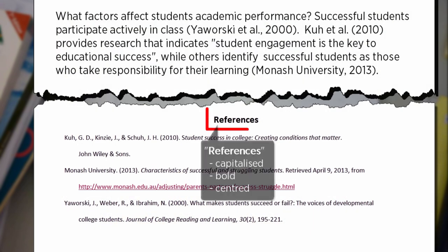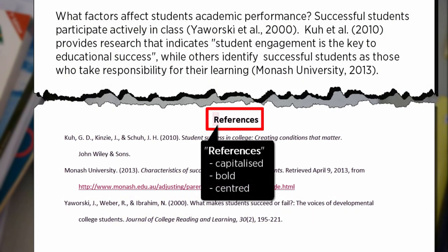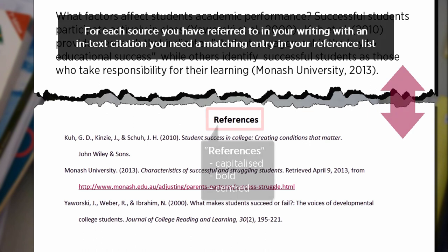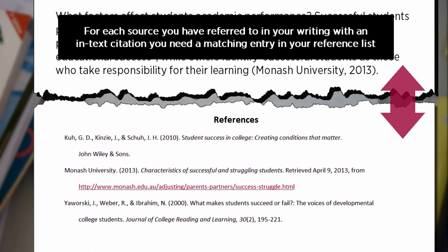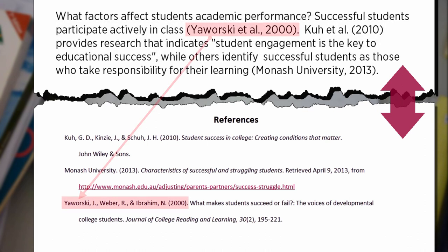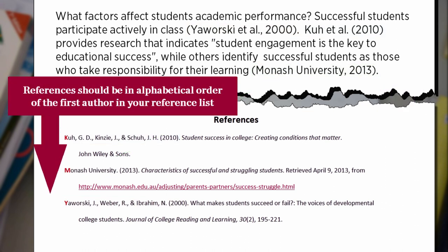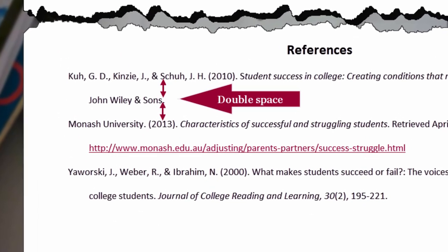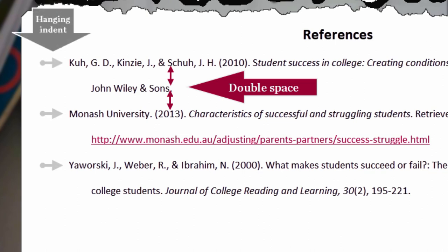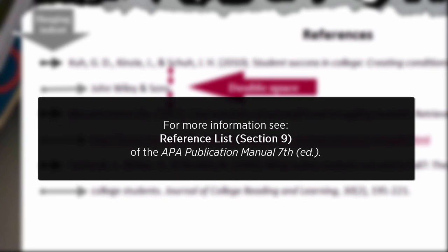Your reference list should be headed 'References,' capitalised, in bold, and centred. For each source you have referred to in your writing with an in-text citation, you need a matching entry in your reference list. Your references should be in alphabetical order by the first author. Double-space all reference list entries and use a hanging indent for all references, meaning the first line of each reference is flush left and subsequent lines are indented. For more information on how to format your reference list, see section 9 of the APA Publication Manual 7th edition.